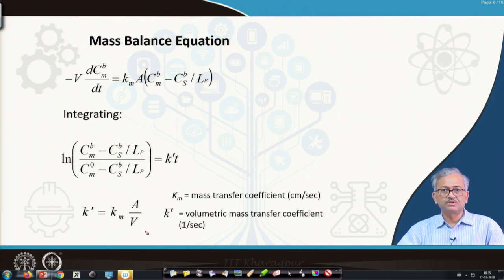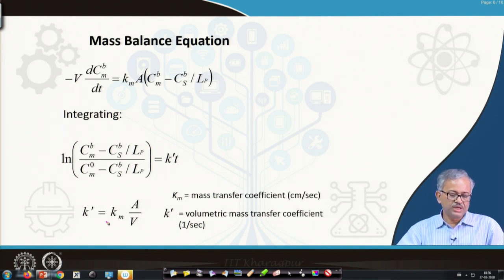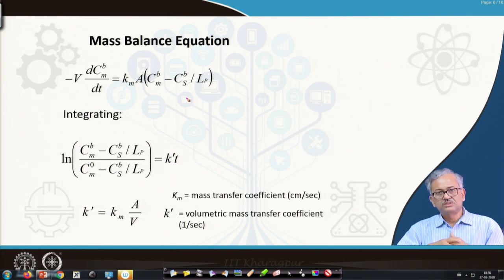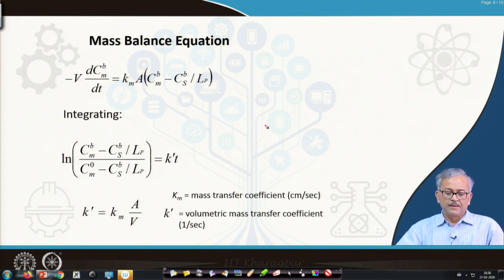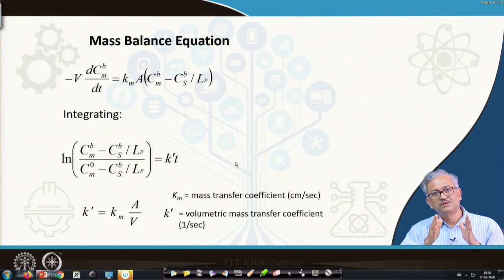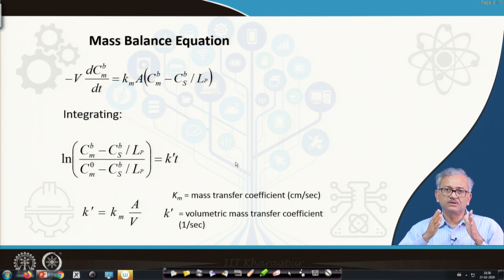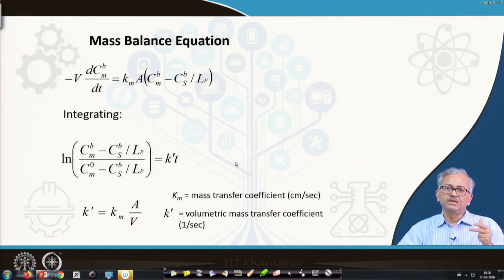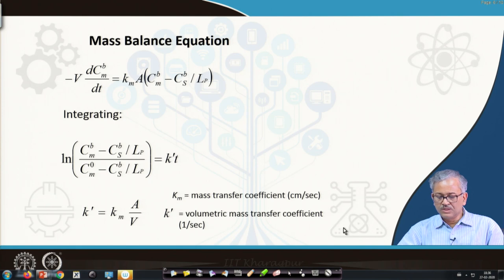Now the question is how to calculate the mass transfer coefficient k_m. There are several models. The mass transfer coefficient gives the conductance of the concentration boundary layer: higher k_m means higher mass flux. It depends on the hydrodynamic condition — if stagnant, mass transfer rate is very low; if turbulent, mass transfer rate is very fast.